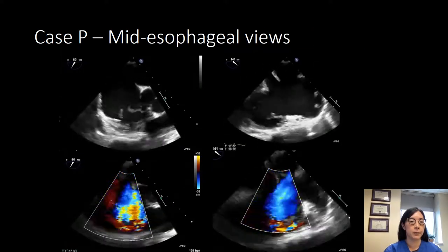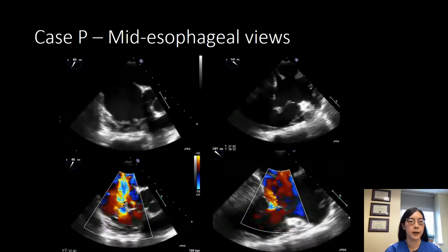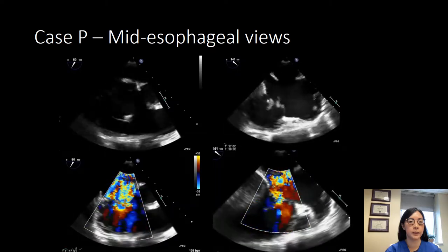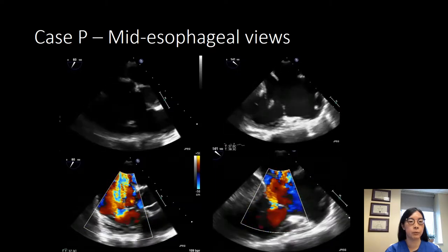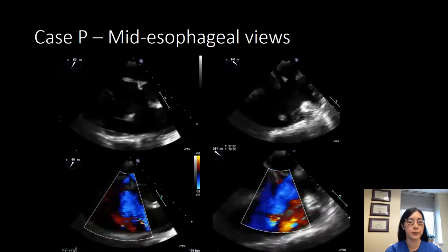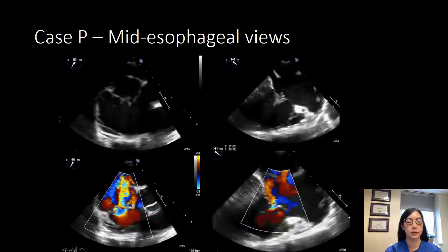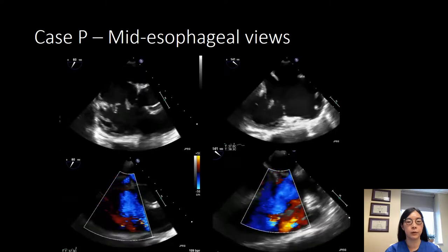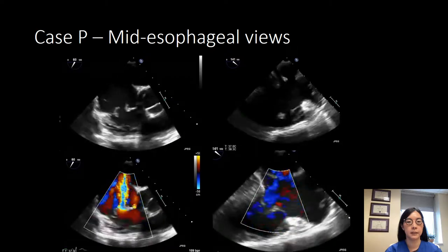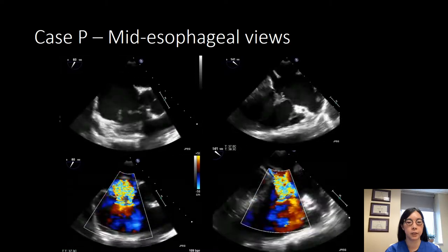We've pulled back up and we're more mid-esophageal again in a short axis inflow-outflow view of the right heart. You can see two leaflets: the anterior, which is more towards the aortic valve, and the posterior leaflet, which is more lateral. There's vegetation clearly on both as well as a jet coming between the two of them. On the right image we're in an off-axis four-chamber view — very posterior, because you can see the coronary sinus coming in — with the posterior and anterior leaflets and vegetations on both.